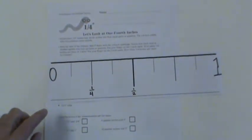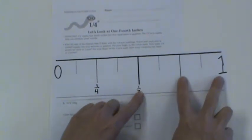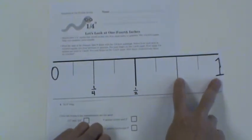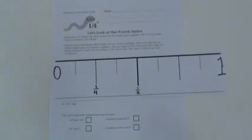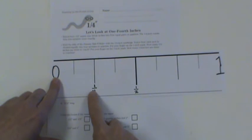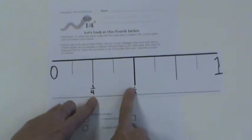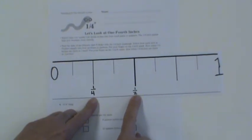So inside we have four: one, two, three, four quarter inches. Those are the fourths that make up the one inch. And you'll see that two of the fourths make one half of an inch.